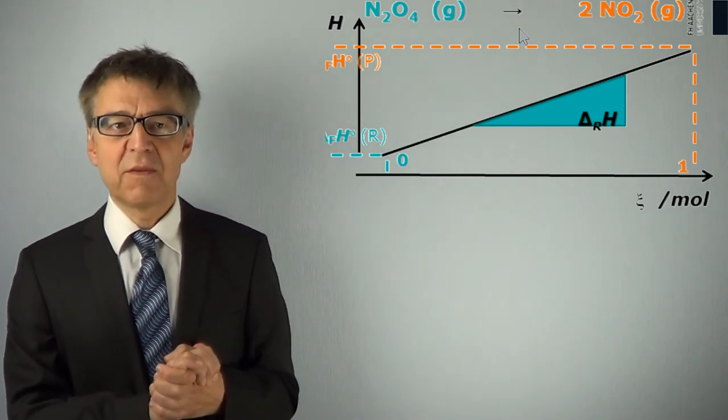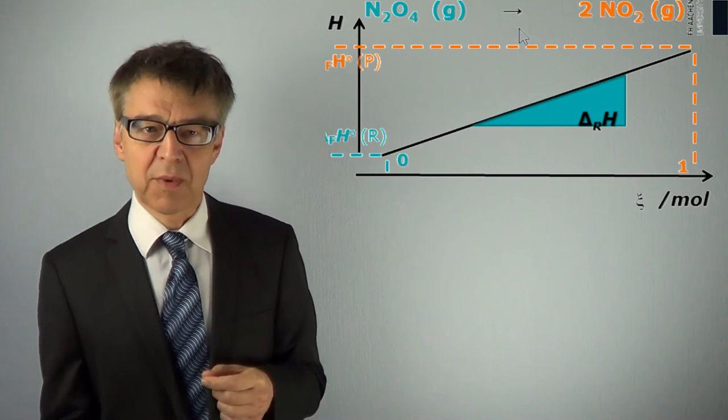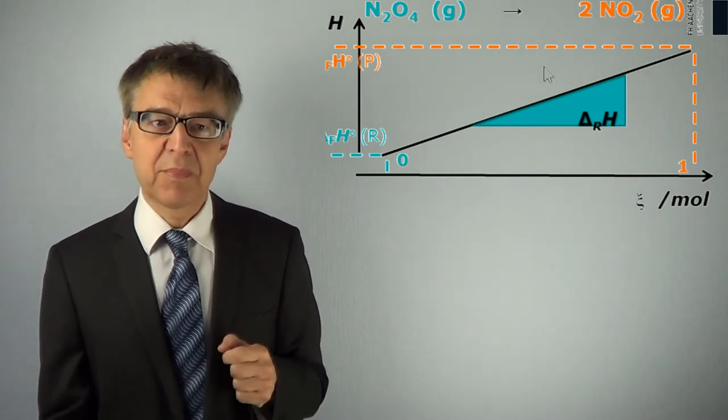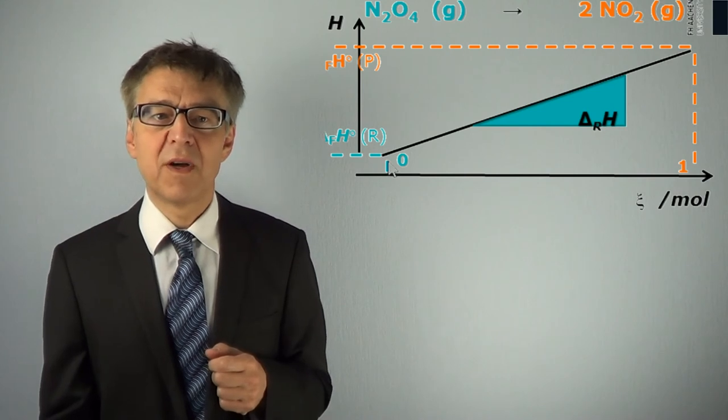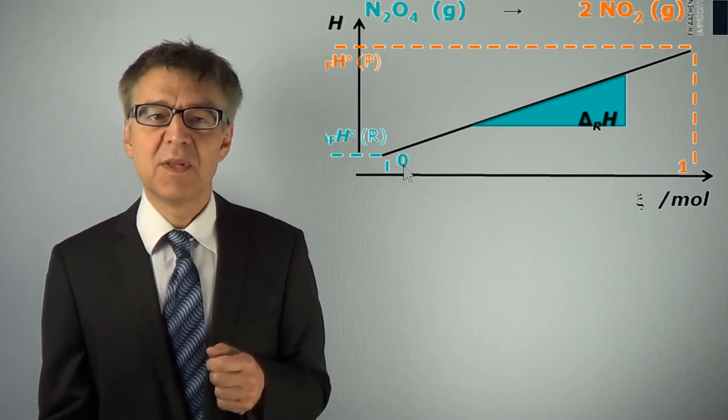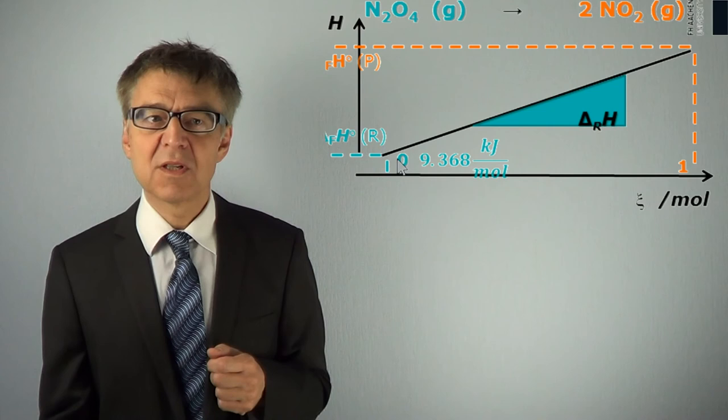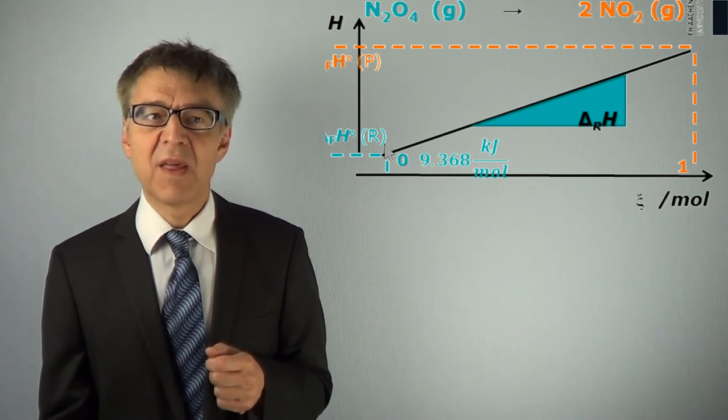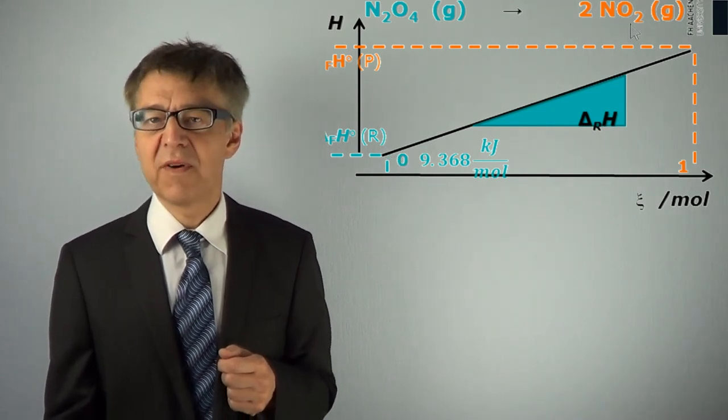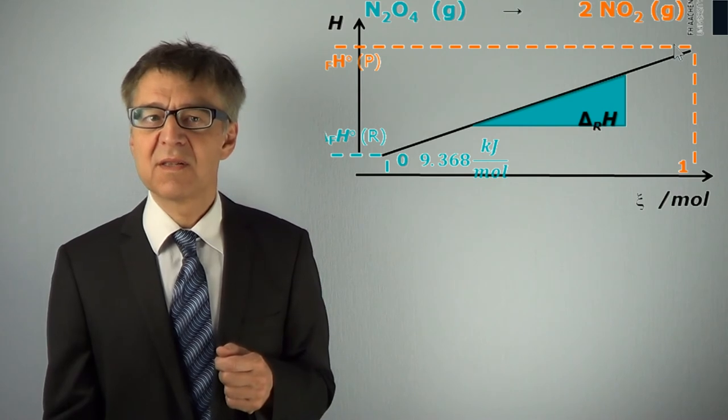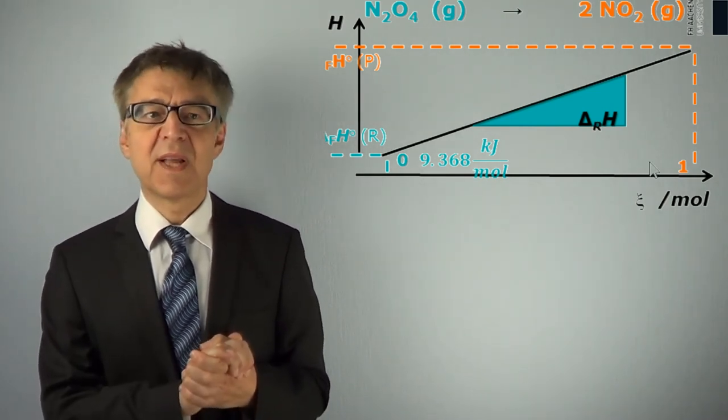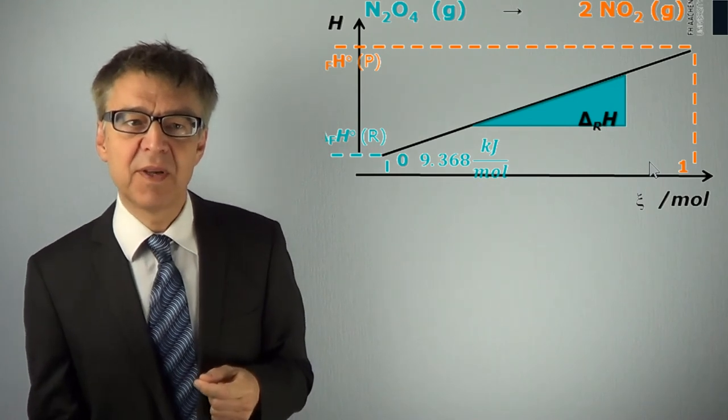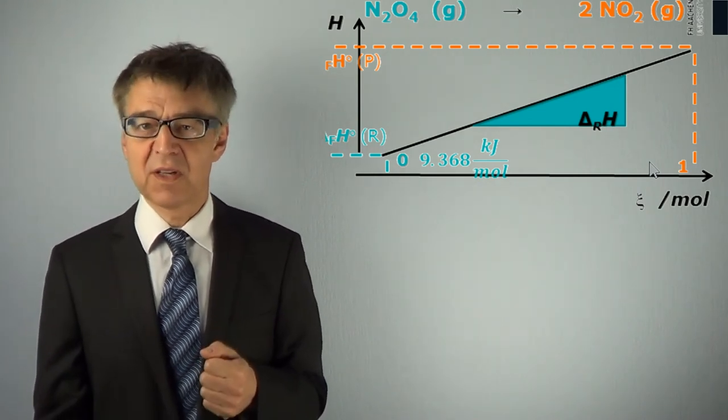The dissociation of N2O4 is an endothermic process. The enthalpy of one mole of reactant N2O4 is 9.368 kilojoules. The enthalpy of two moles of NO2 is 66.64 kilojoules. This corresponds to a standard process enthalpy of about 57 kilojoules.